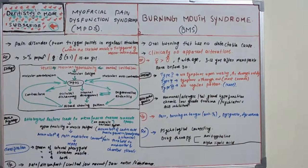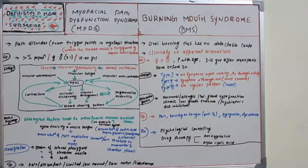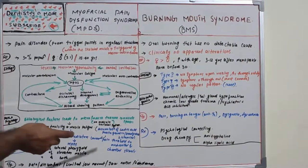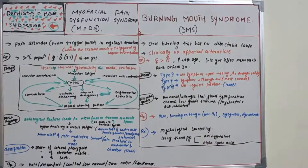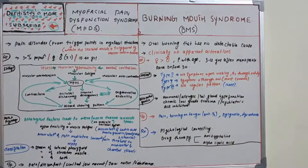The etiological factors of BMS are not confined to any particular cause. They are classified into local and systemic factors. Local factors include oral candidiasis, lichen planus, and allergy. Systemic factors include hormonal changes, vitamin B12, folic acid or iron deficiency, diabetes mellitus, side effects of medications, autoimmune diseases, salivary gland disorders, ACE inhibitors, trauma, and psychiatric problems.